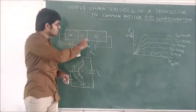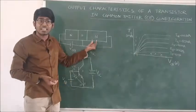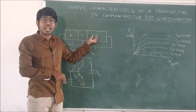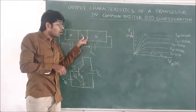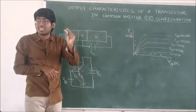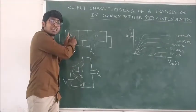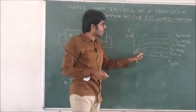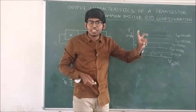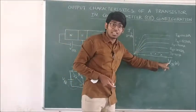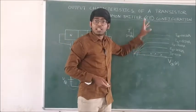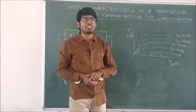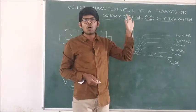When we increment VCC, VCE increments. The depletion region width change is not uniform — the spread is more in the base, so the base width becomes very small, and the number of carriers reaching from the emitter to the collector increments. Until a certain point, the collector current gets incremented. After a certain point, even though we increment the voltage VCE, the collector current almost remains constant.